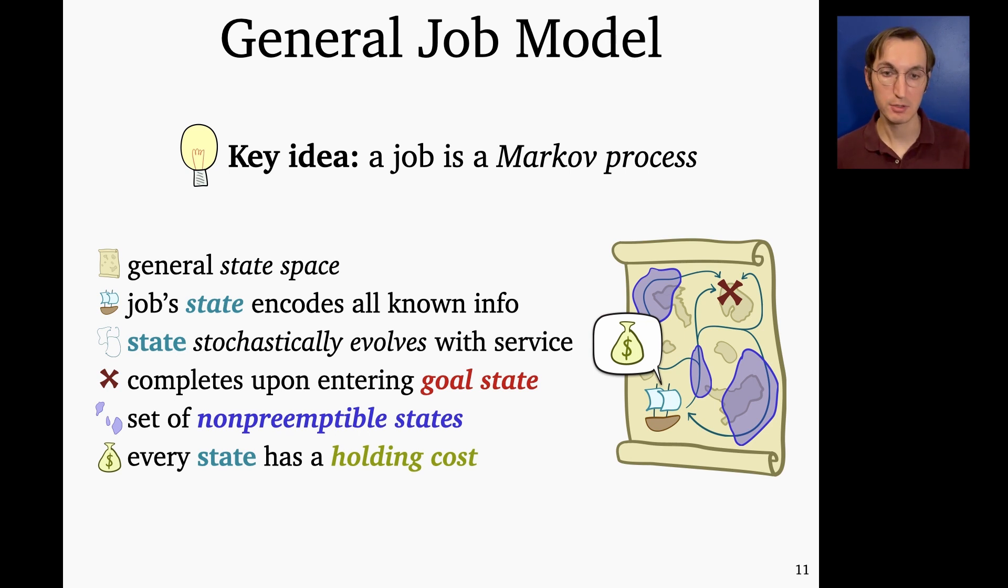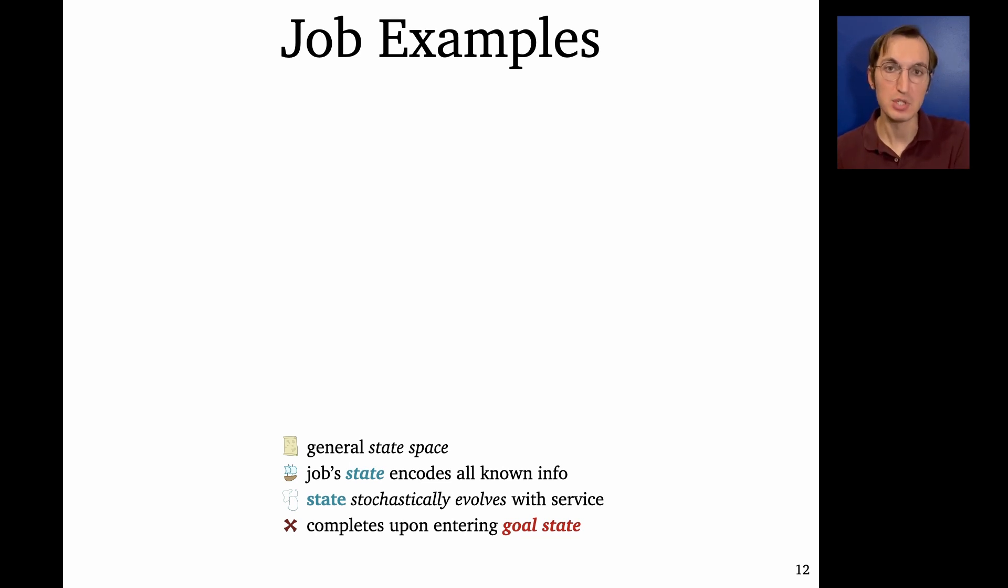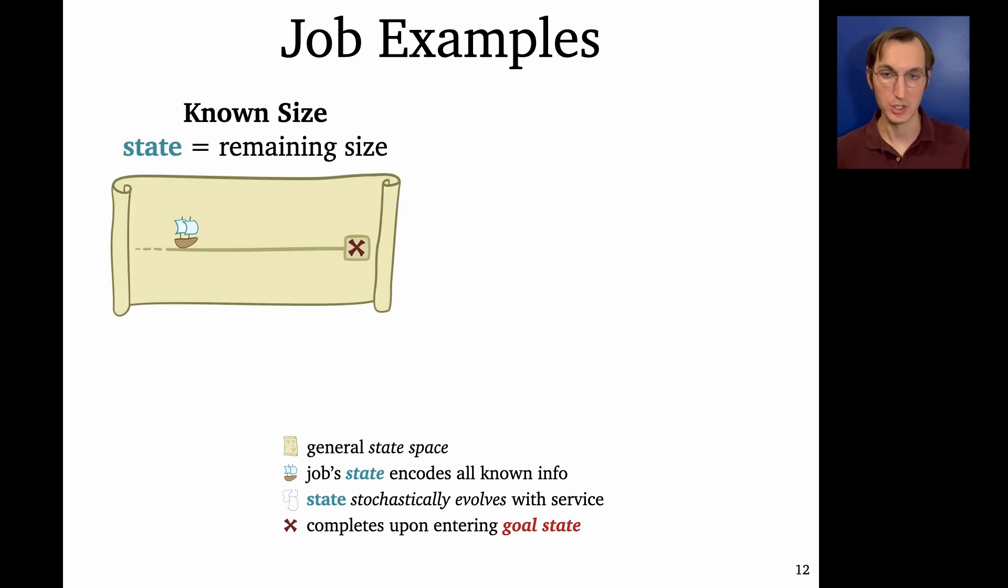And what we're going to be concerned with is scheduling these jobs to minimize the average holding cost. But before I get to that, let's just go through some examples of what this job model might look like. So let's talk about what do known sizes look like in this job model? Well, in this case, a job is a, remember a job is a Markov process, its state is what we know about it. So if we have known sizes, then the state of a job is its remaining size. So the state space is like the positive real line, the goal state is at zero, right? When we reach remaining size zero, the job finishes. And the dynamics are just that a job advances towards completion, advances towards state zero, at rate one as we serve it.